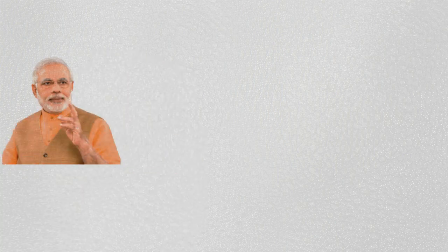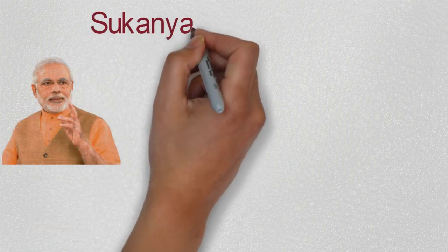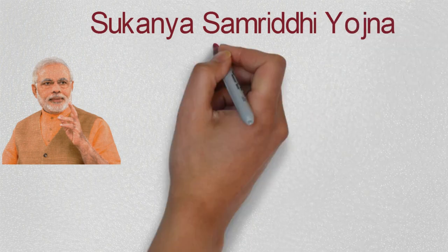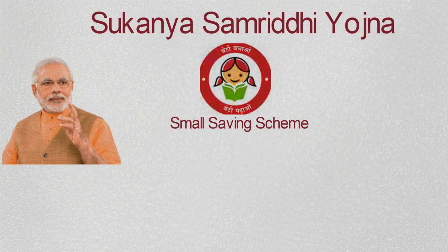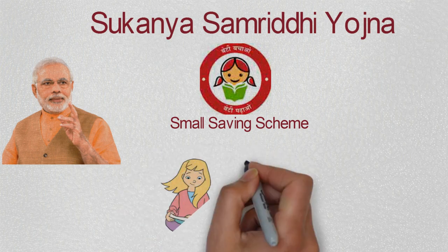The Prime Minister Mr. Narendra Modi started Sukanya Samriddhi Yojana under Beti Bachao Beti Padhao scheme. It is a small saving scheme for girls' education and marriage.